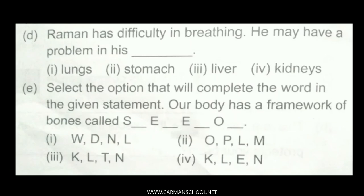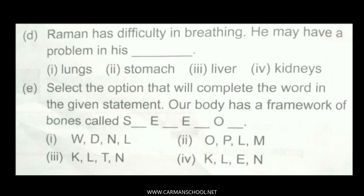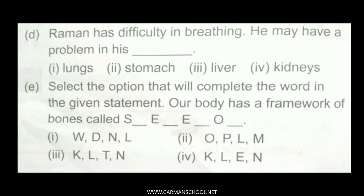Question D: Raman has difficulty in breathing. He may have a problem in his blank — lungs, stomach, liver, or kidneys. The correct answer is lungs, because our lungs help us to breathe. Very good.